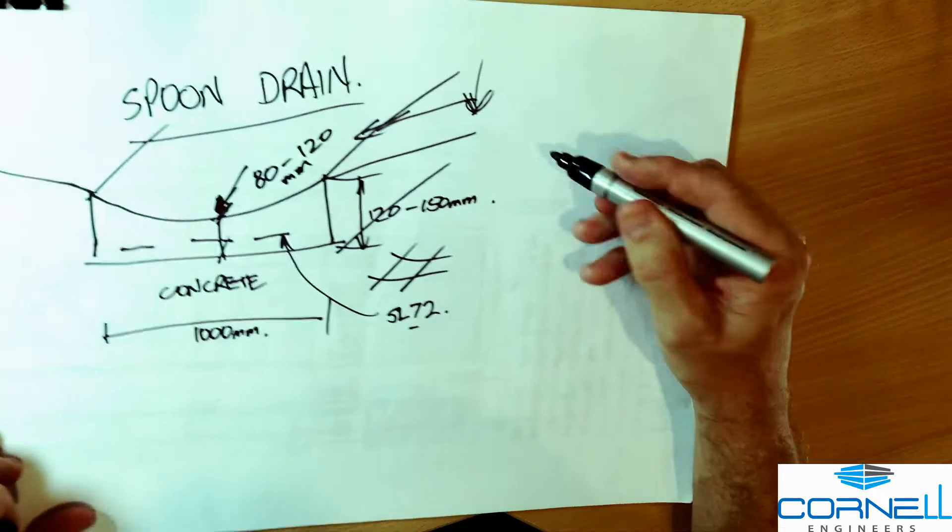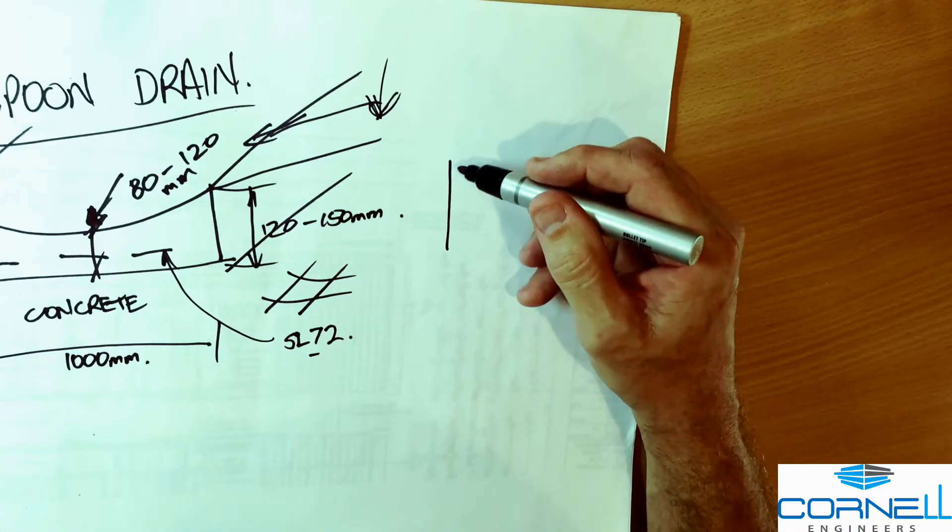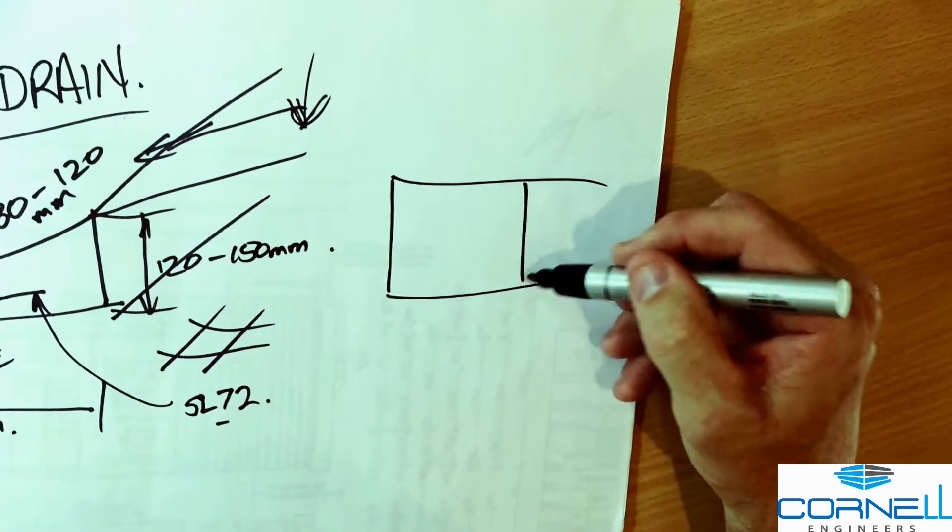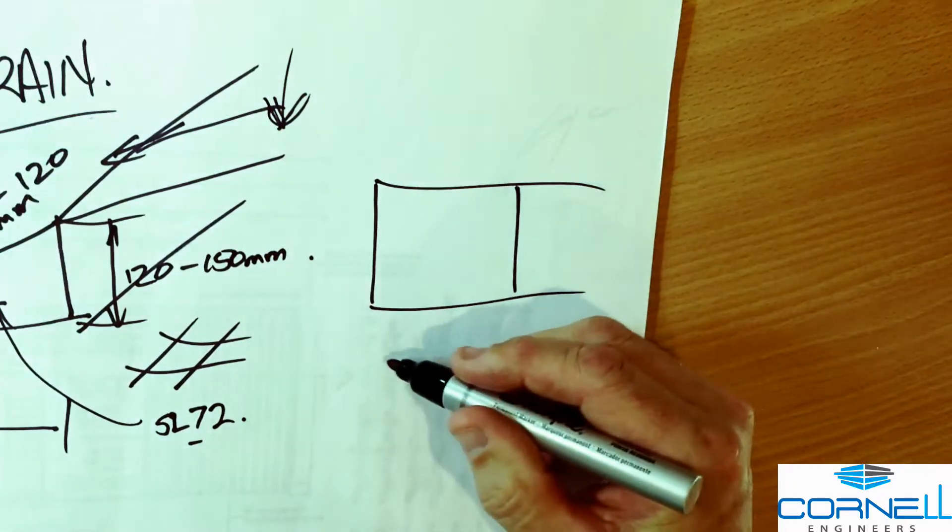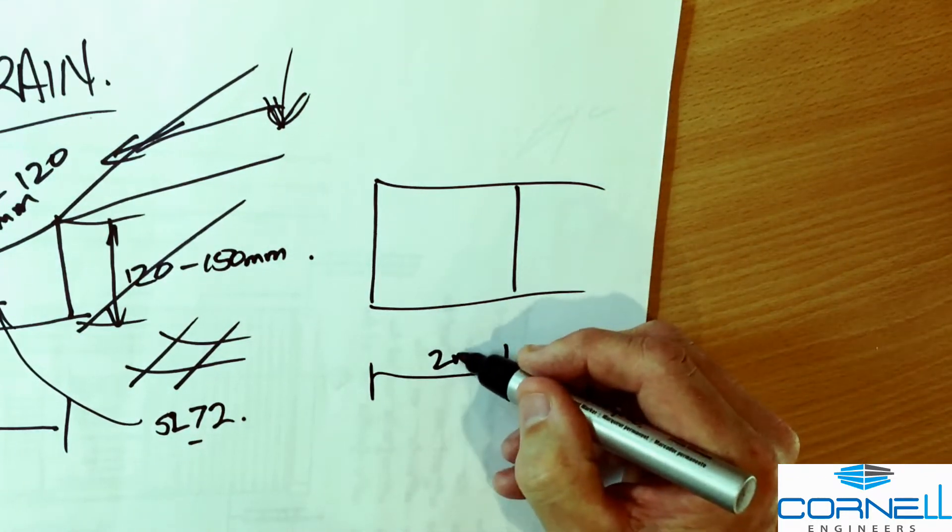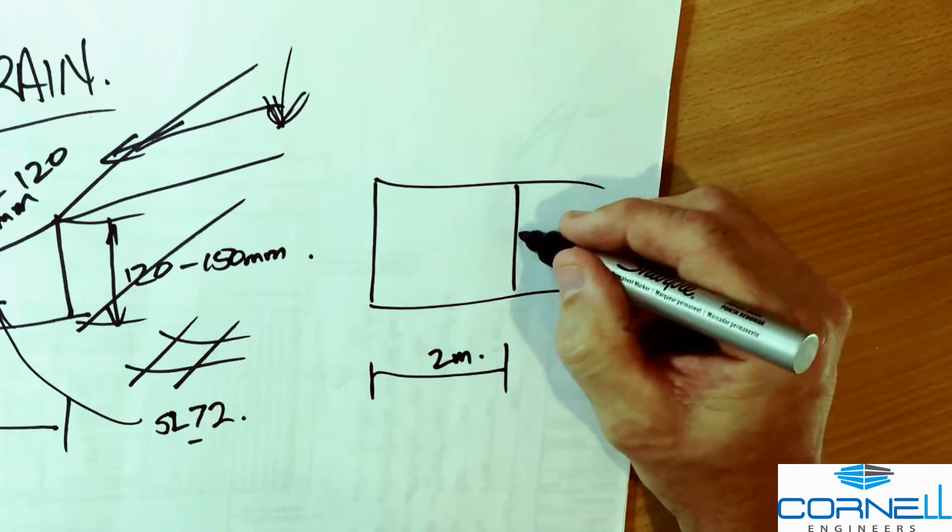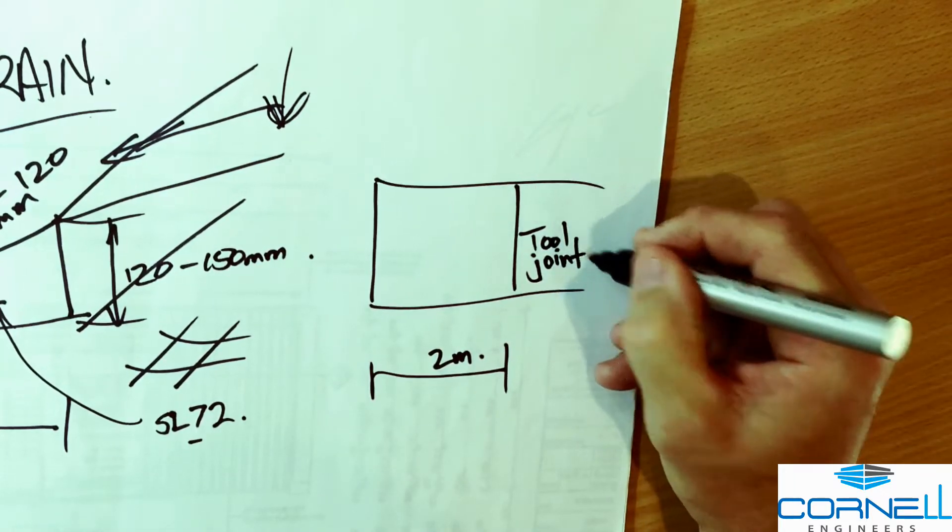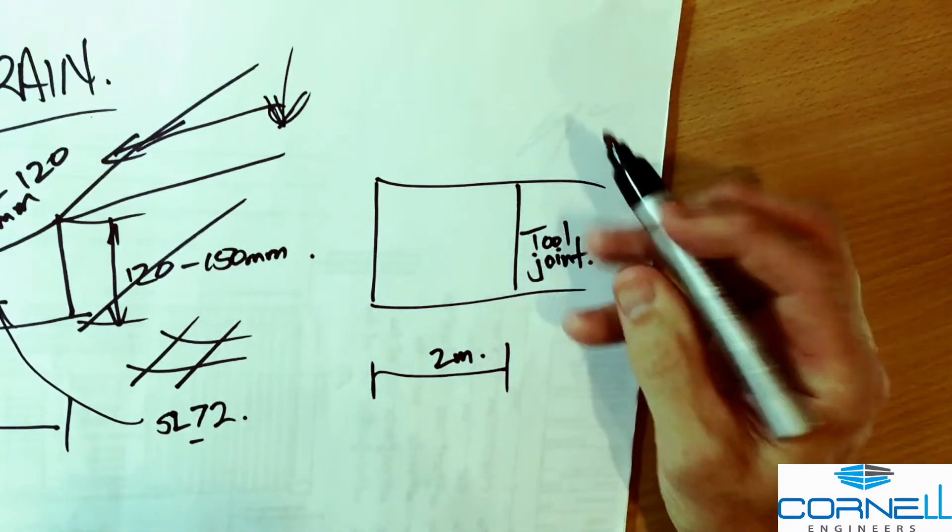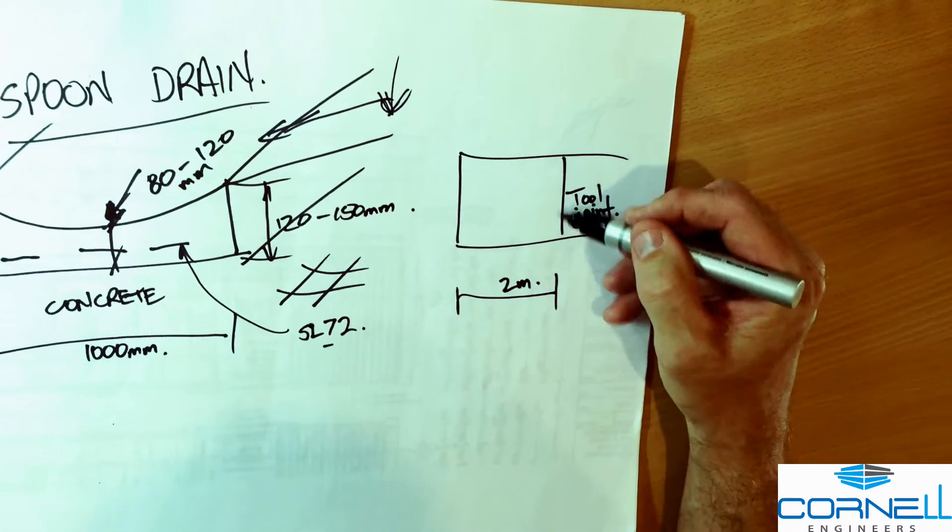A spoon drain because it's concrete and because concrete shrinks is going to need something to control the cracking. So at about two meter centers we're going to specify tool joints just so the concrete has somewhere to crack neatly without causing any alarm with uncontrolled cracking.